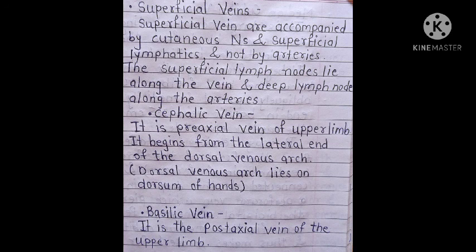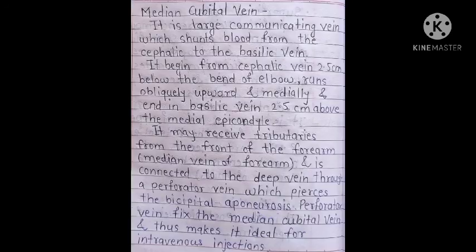The basilic vein is the post-axial vein of the upper limb. The median cubital vein is a large communicating vein which shunts blood from the cephalic to the basilic vein. It begins from the cephalic vein 2.5 cm below the bend of the elbow, runs obliquely upward and medially, and ends into the basilic vein. It may receive tributaries from the front of the forearm (median vein of the forearm) and is connected to the deep vein through a perforator vein which pierces the bicipital aponeurosis, fixing the median cubital vein and making it ideal for intravenous injection.